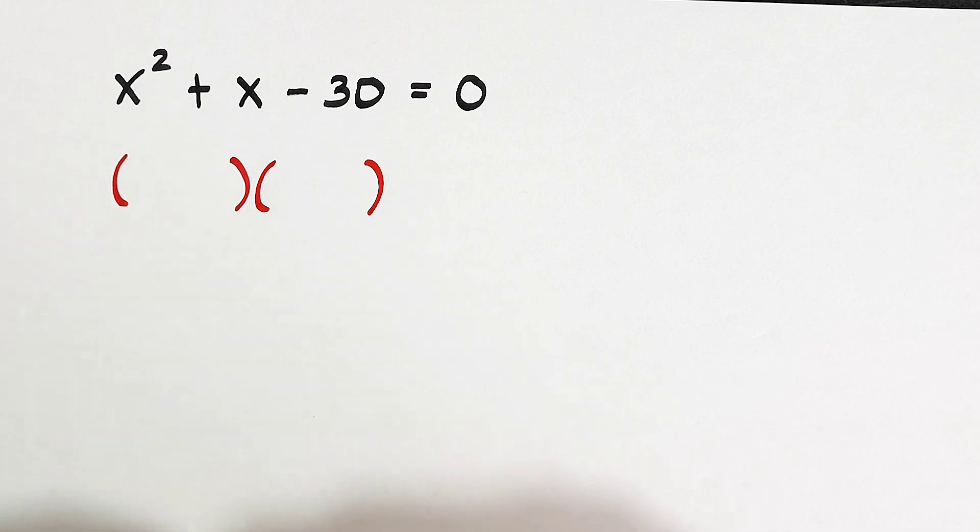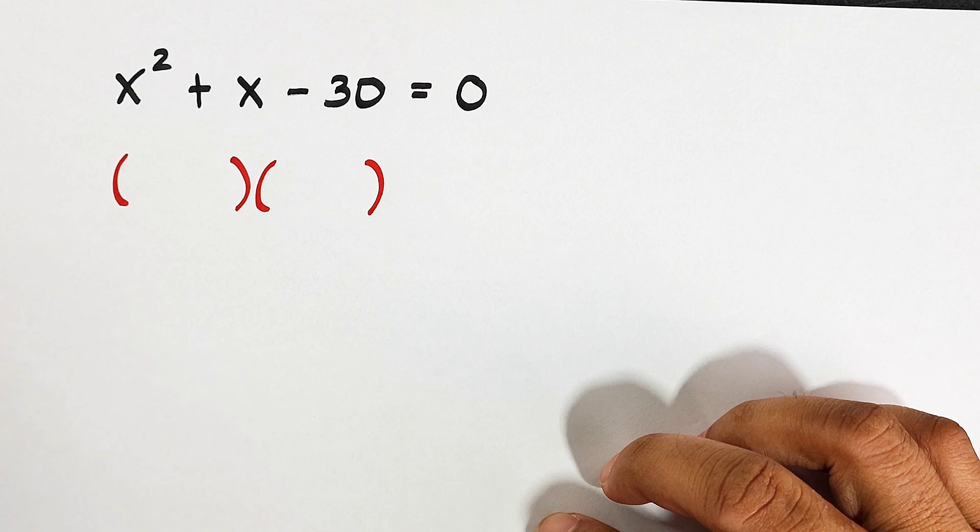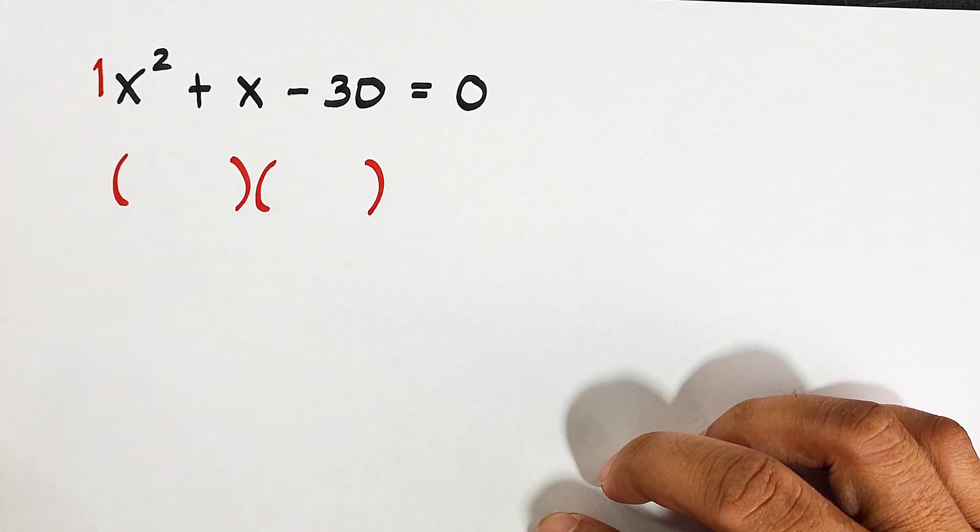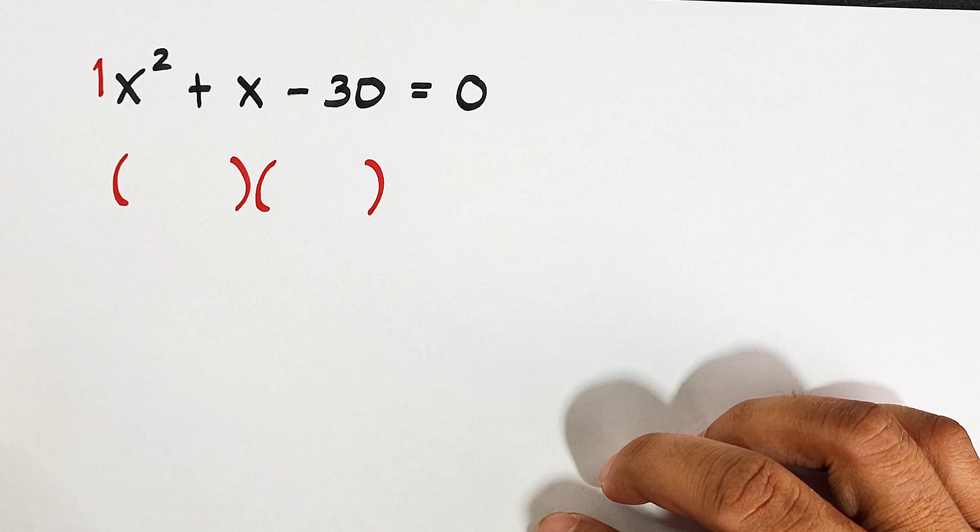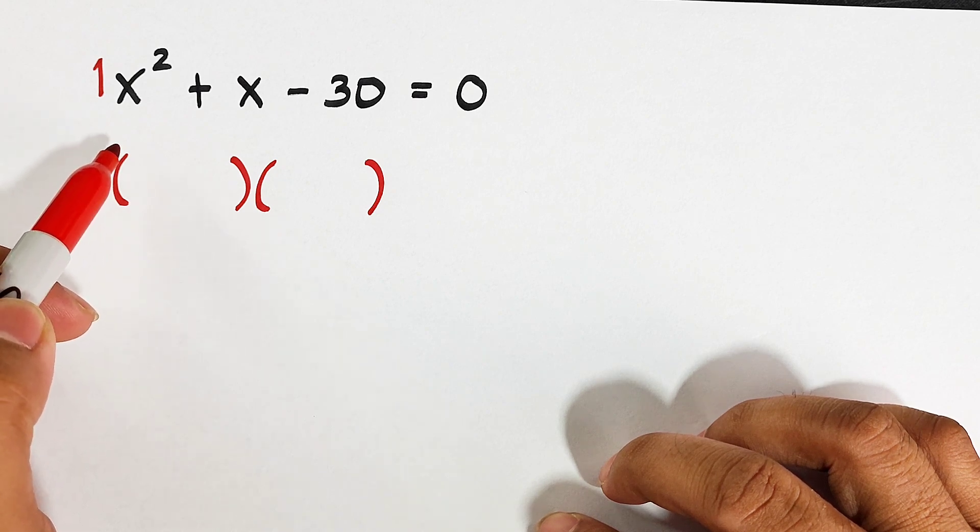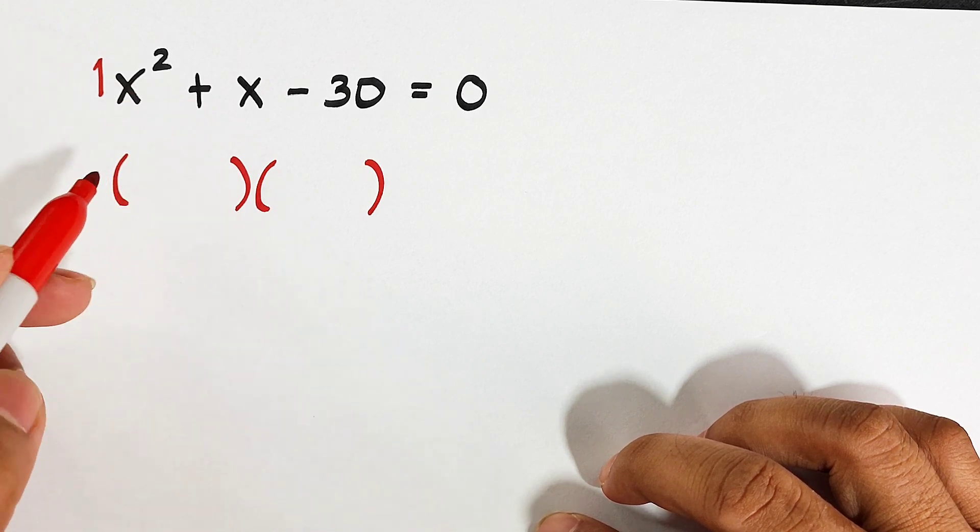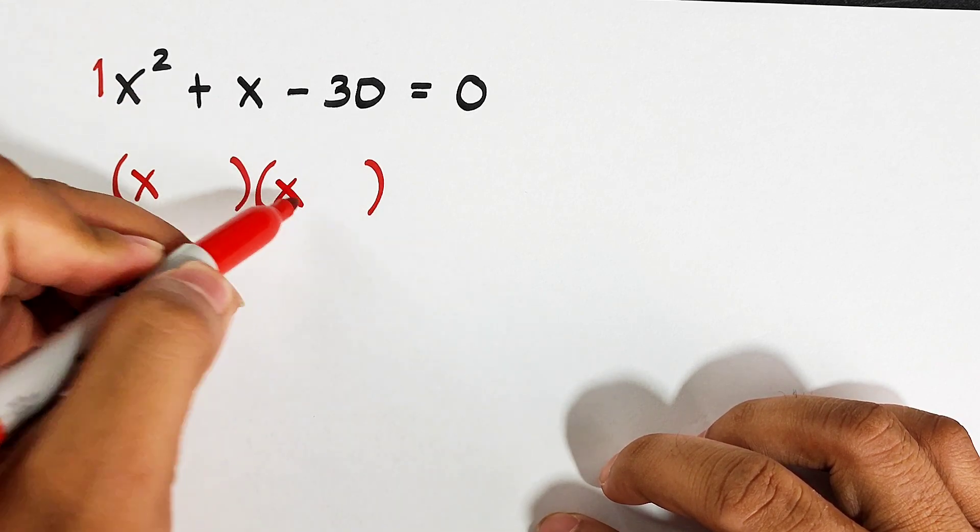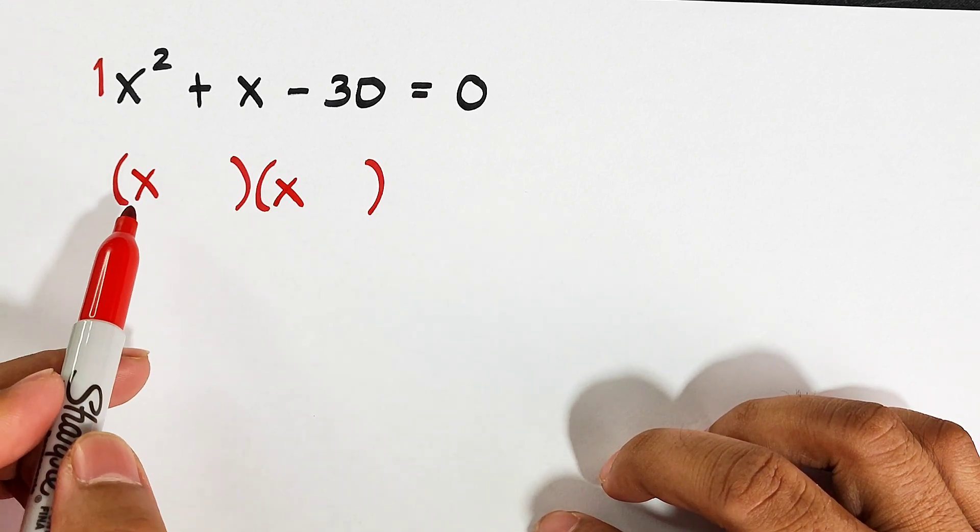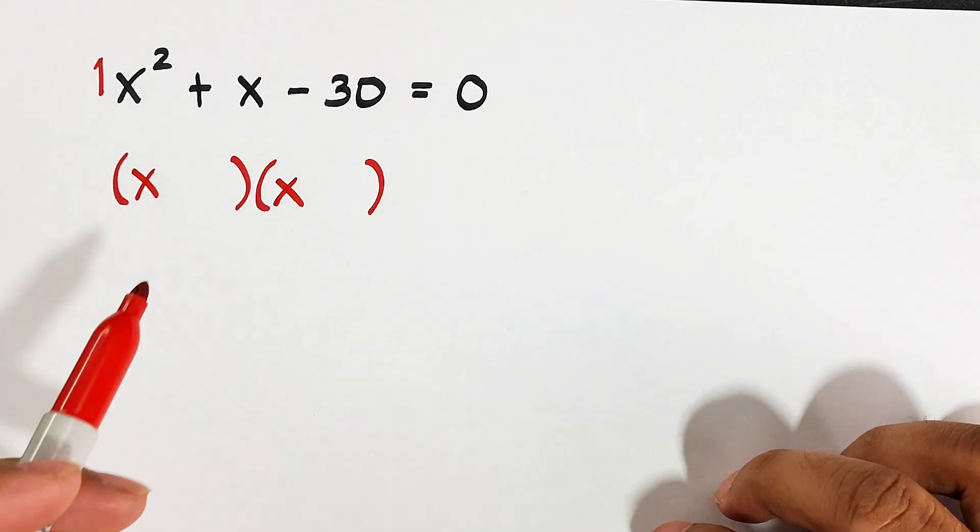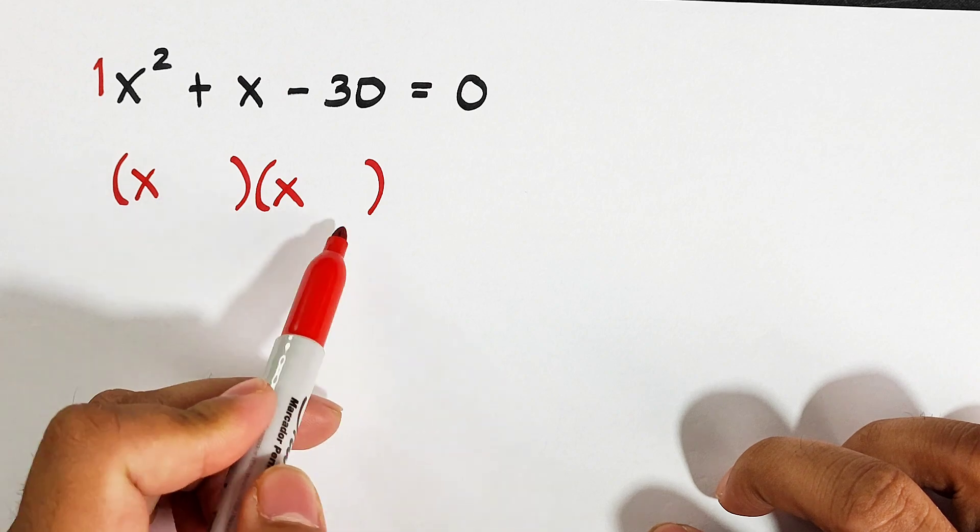As you can see, the first term of the quadratic equation is simply x squared. If the quadratic equation or if the first term of the quadratic equation is x squared, it simply means that the coefficient is only 1. If that is the case, if the coefficient of your first term in a quadratic equation is simply 1, or the term is x squared, the first terms of the factors are x and x. Because when we multiply x times x, that is x squared. So the only problem here is to find out what are the second terms of these factors.